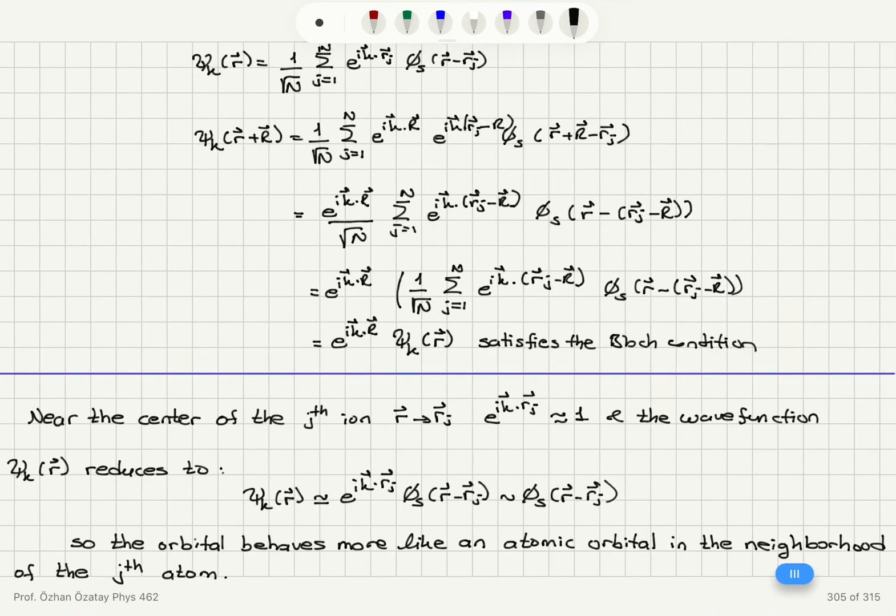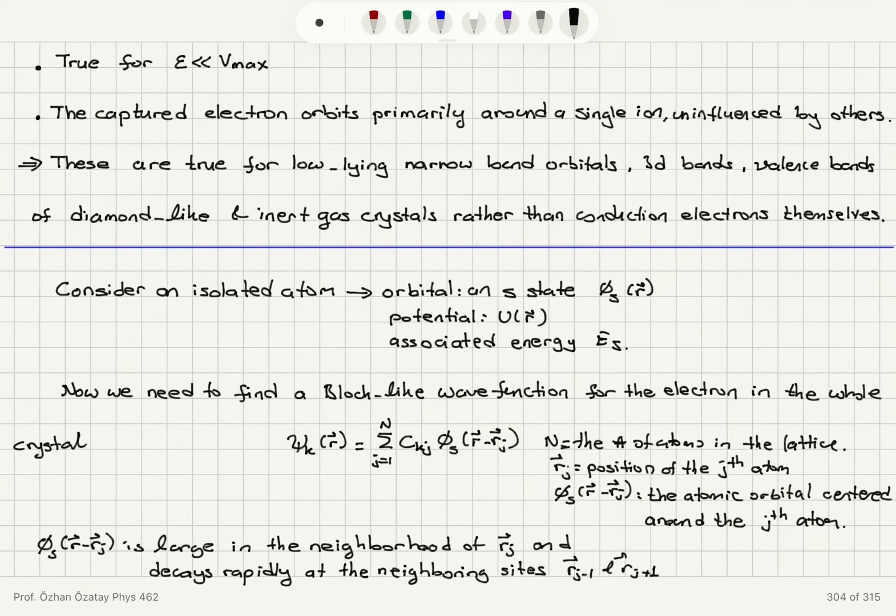Now the wave function that I'm going to suggest to have this Bloch form is basically 1 over square root capital N sum j equals 1 to capital N e to the i k dot rj phi s of r minus rj.